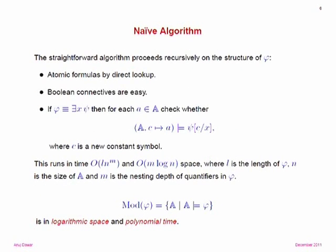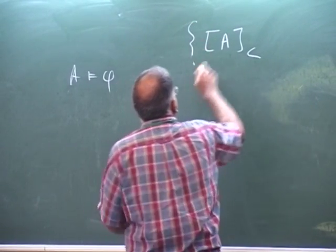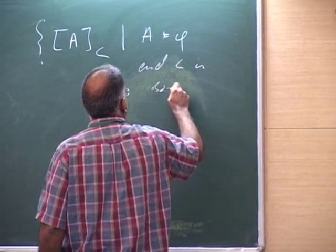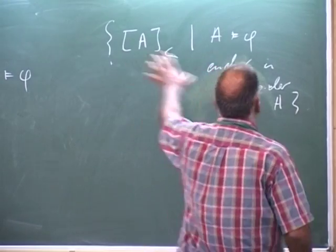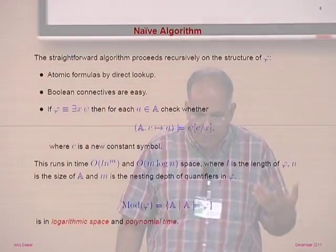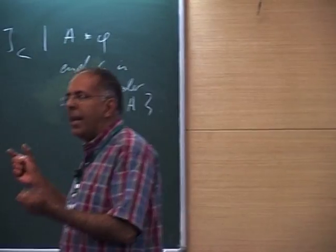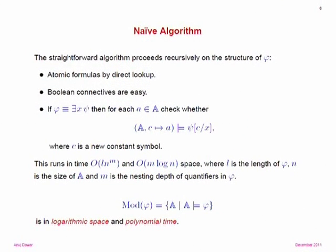Having fixed the idea of an encoding, we can ask about the complexity of the set of strings such that A satisfies phi. As Ramanujam pointed out, for fixed phi this is logarithmic space and polynomial time — more precisely, it runs in time L times N^M, where L and M are parameters depending only on the formula and N is the size of the structure, using M log N space. So if L and M are constants, this is polynomial time in logarithmic space; otherwise, considering L and M as part of the input, it's exponential time in polynomial space.